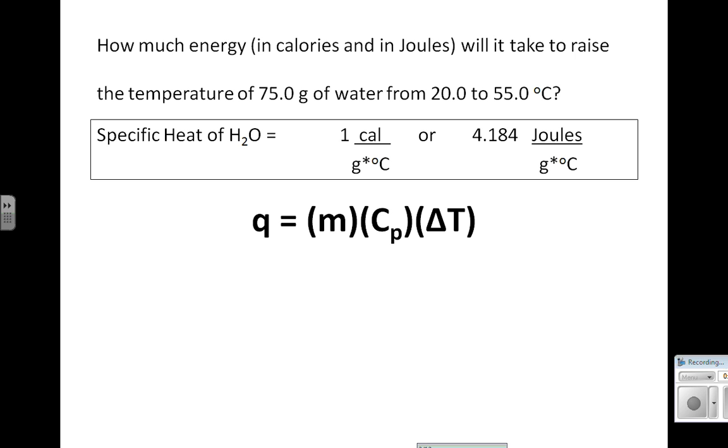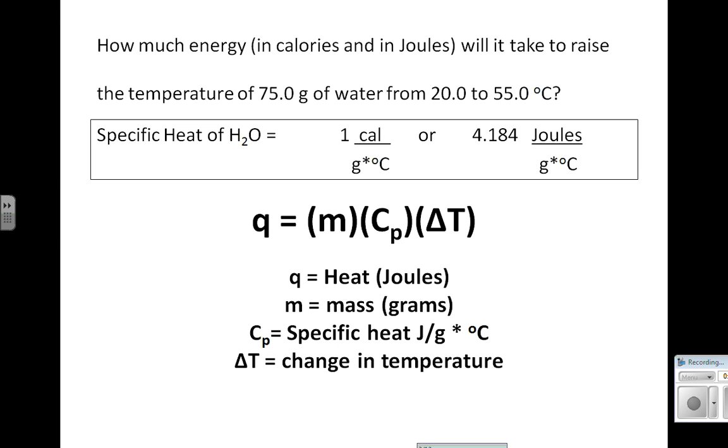The formula we're going to use is Q equals M times Cp times delta T. What do all those variables mean? Q is what we're solving for—that is heat, and it can be in joules or in calories. Joules is our SI unit of measurement.